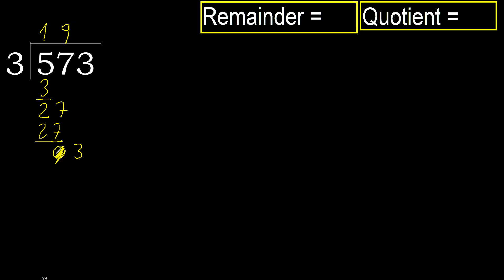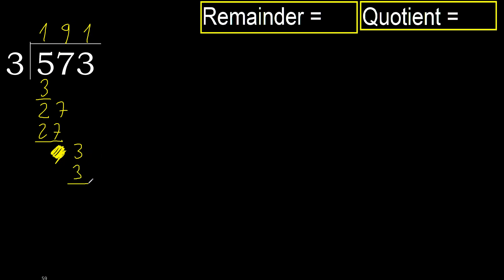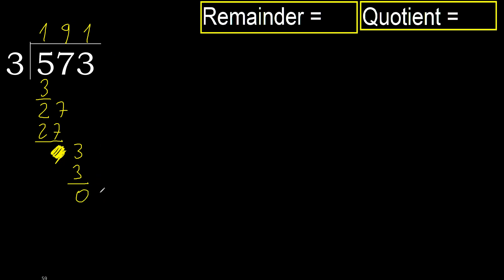Eliminate the 0 here. We have 3 remaining. 3 multiplied by 1 equals 3, which is not greater. Subtract. There is no next number, therefore we finish.